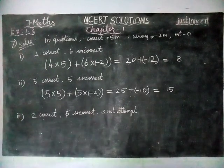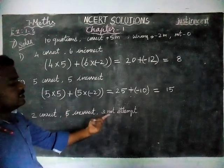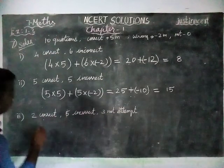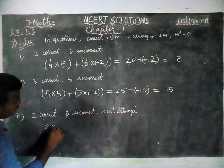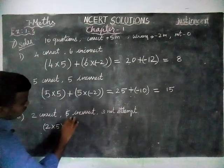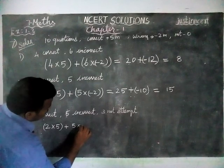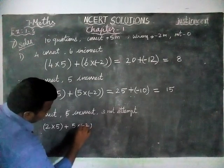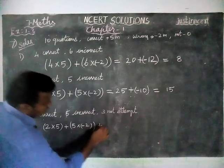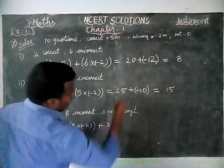And next, Hina gets 2 correct answers, 5 incorrect answers and remaining 3, she did not attempt itself. So, now we are going to find 2 into correct marks 5 plus 5 into incorrect mark is minus 2 plus not attempted 3 questions into not attempt means 0.